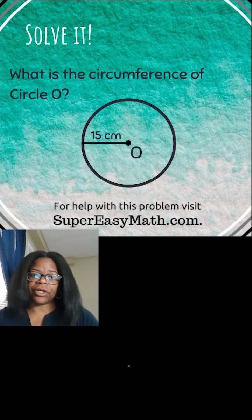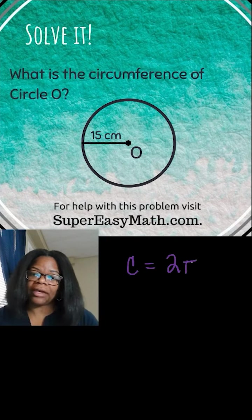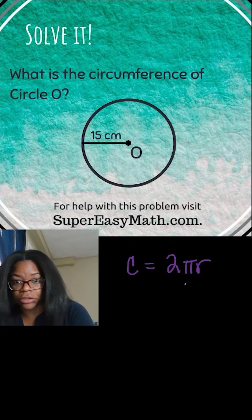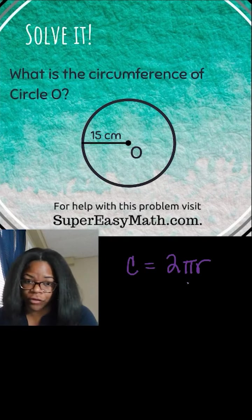In order to calculate the circumference of a circle, you need to know the formula for circumference, which is C equals 2πr, or circumference equals 2 pi r. The pi stands for 3.14 and so on, and we usually just write it as the symbol pi, or you can write it as 3.14, or you can write it as 22 over 7.